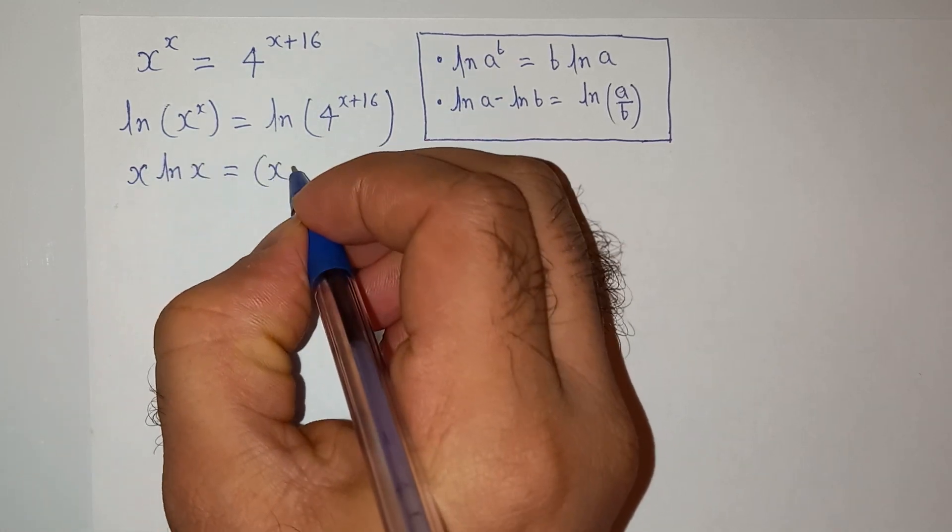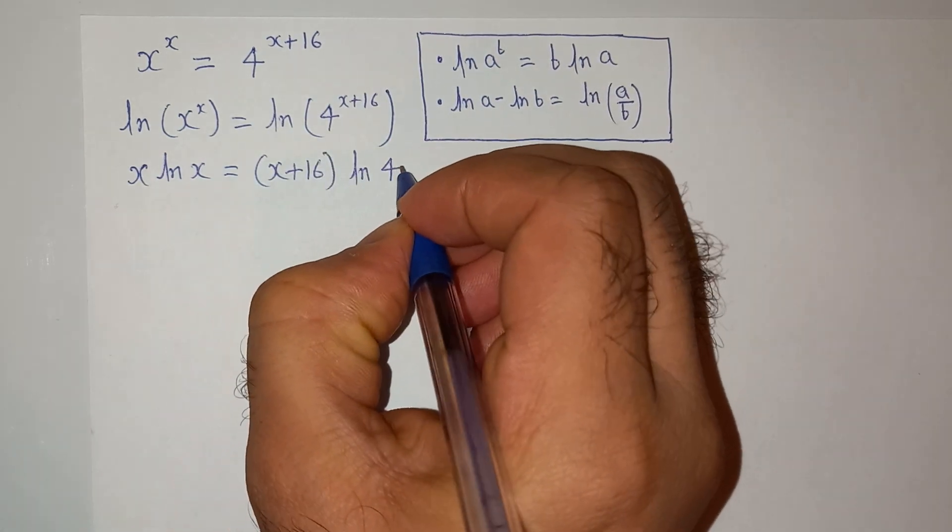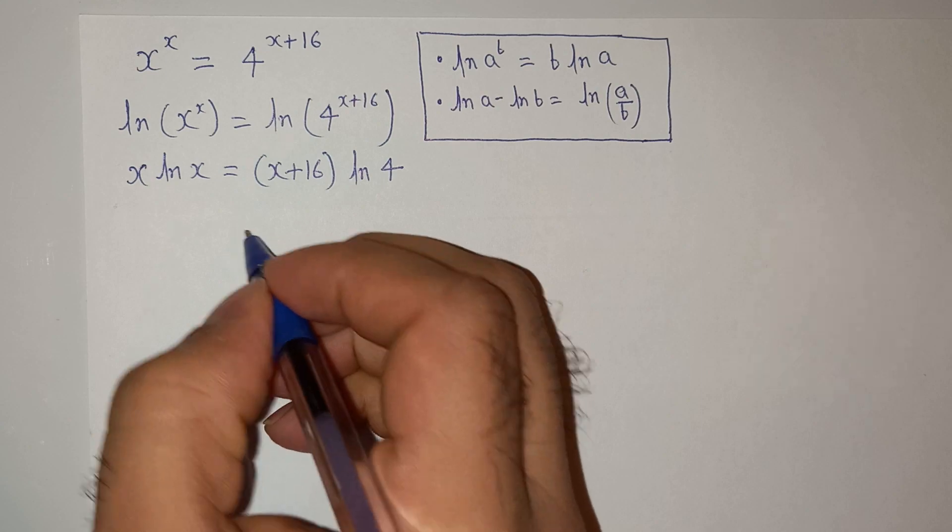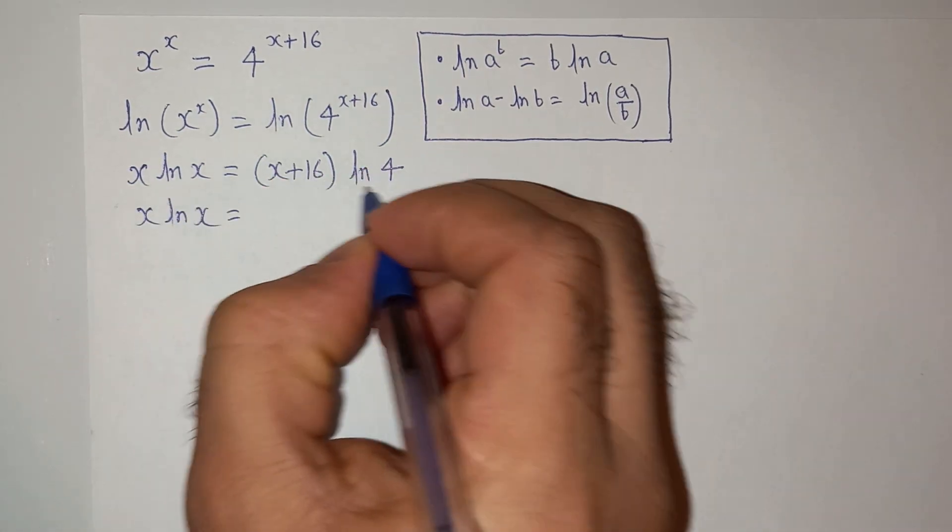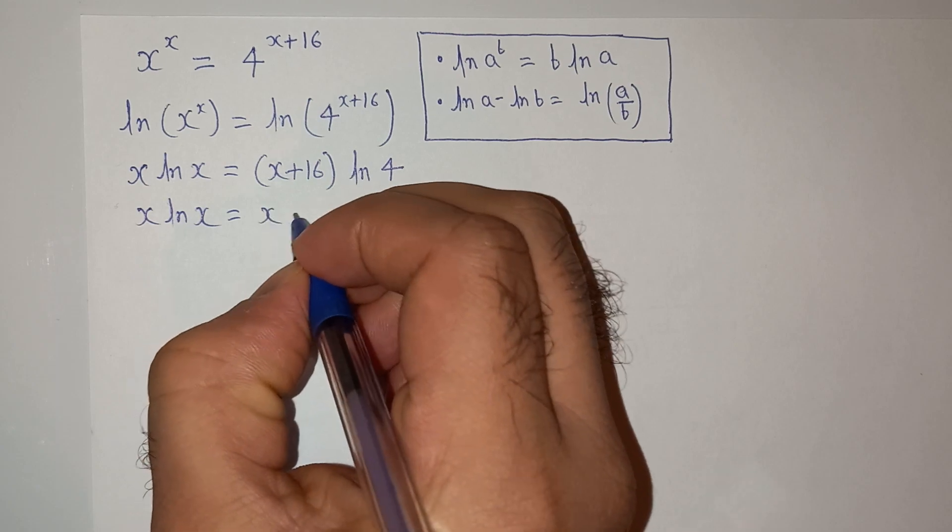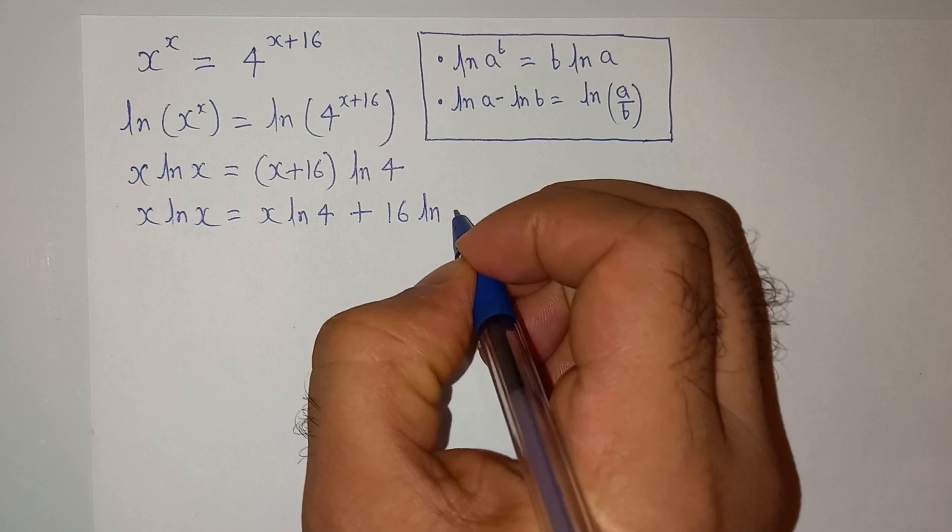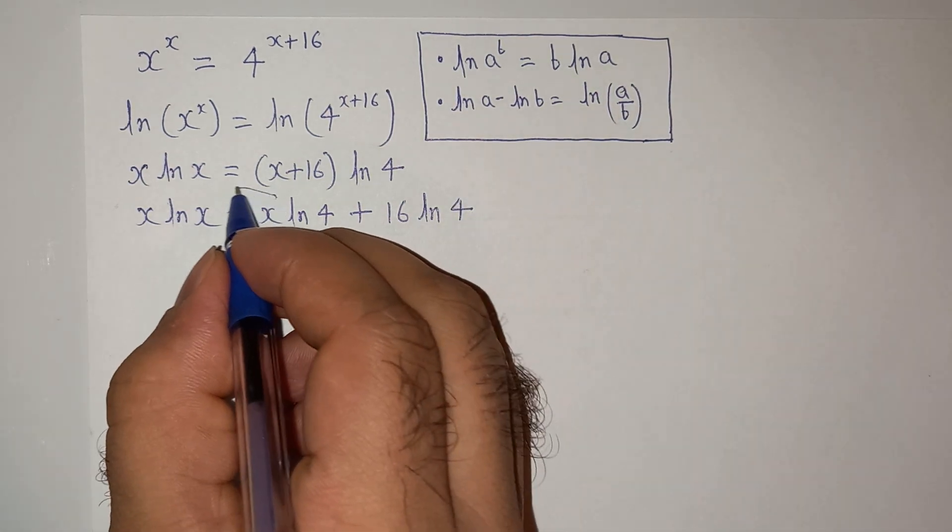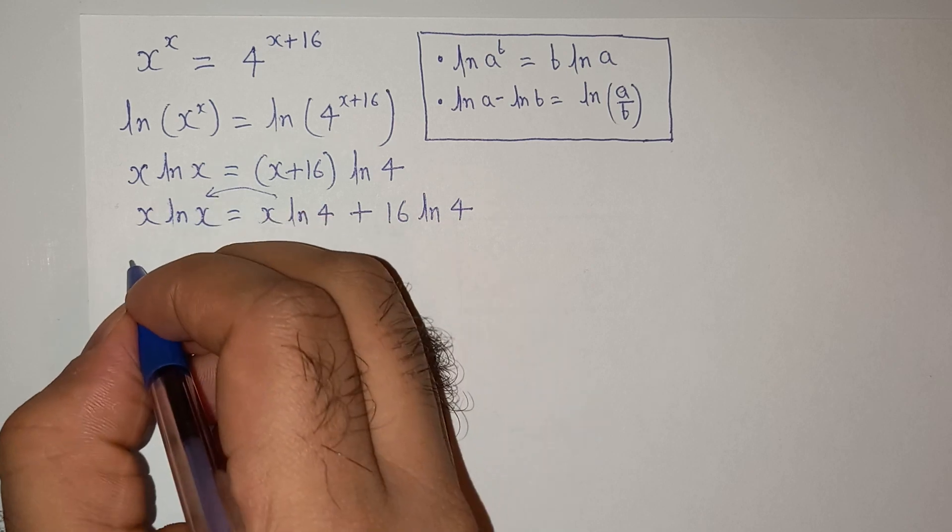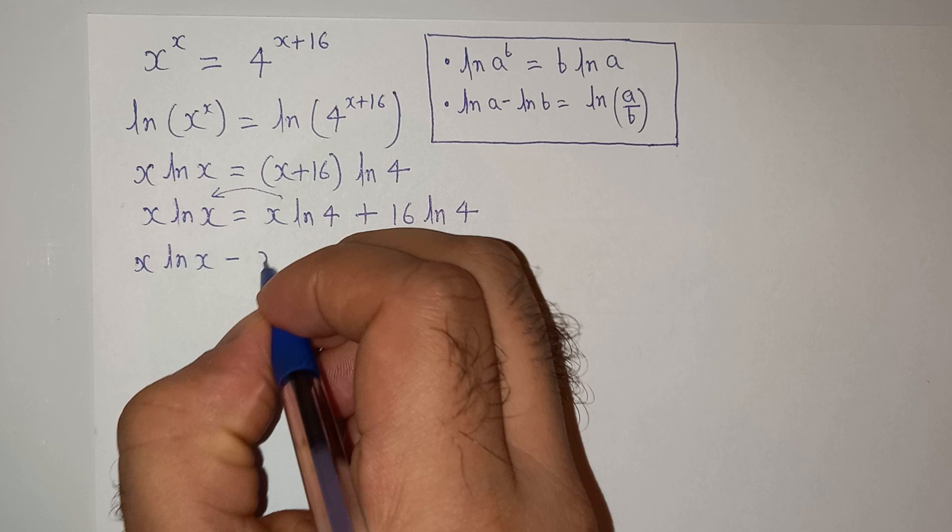x log x, now let's open this bracket so this will be x log 4 plus 16 log 4. Now let's bring this term on the left hand side: x log x minus x log 4 equals to 16 log 4, right.